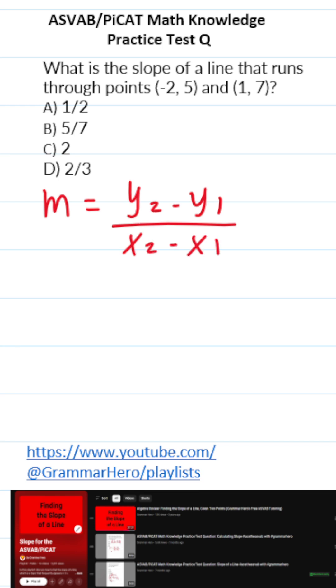And you might be saying to yourself, where do I get X1, Y1, X2, Y2 from? Again, all ordered pairs come in the form XY. So I can say negative 2 is going to be X1, 5 is going to be Y1. This 1 is going to be X2, and this 7 is going to be Y2.